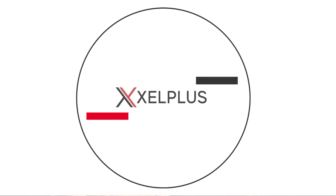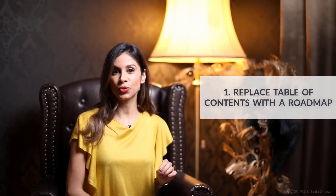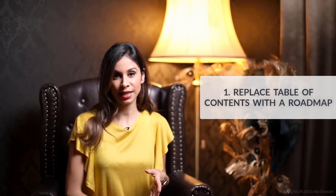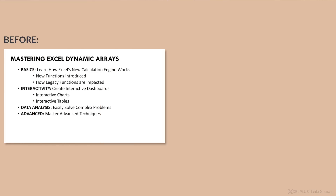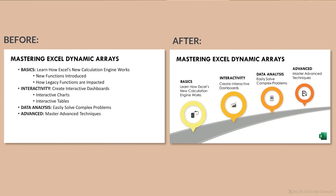My most important tip for you is to use roadmaps. You can use these in two different ways. Number one is to get rid of your table of contents slide and replace it with a roadmap. So for example, instead of presenting the table of contents like a plain list, you'd present it visually. It's clear that with each single step, your audience is learning more — they're moving up the road to a certain outcome.